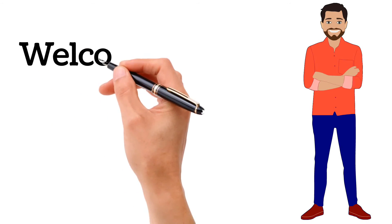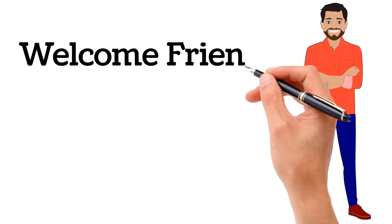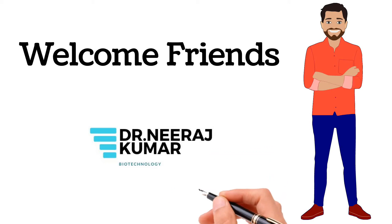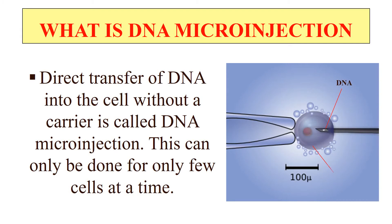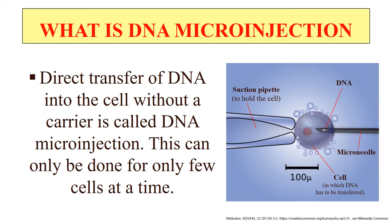Hello everyone, welcome back. Without any delay, let's start the video. So, it is a direct transfer method. In this, we just inject our DNA inside the cell — just simple as that. We take DNA into a syringe and inject that DNA into the cell. This technique is generally used for cells which are large in size, like for example, oocytes.